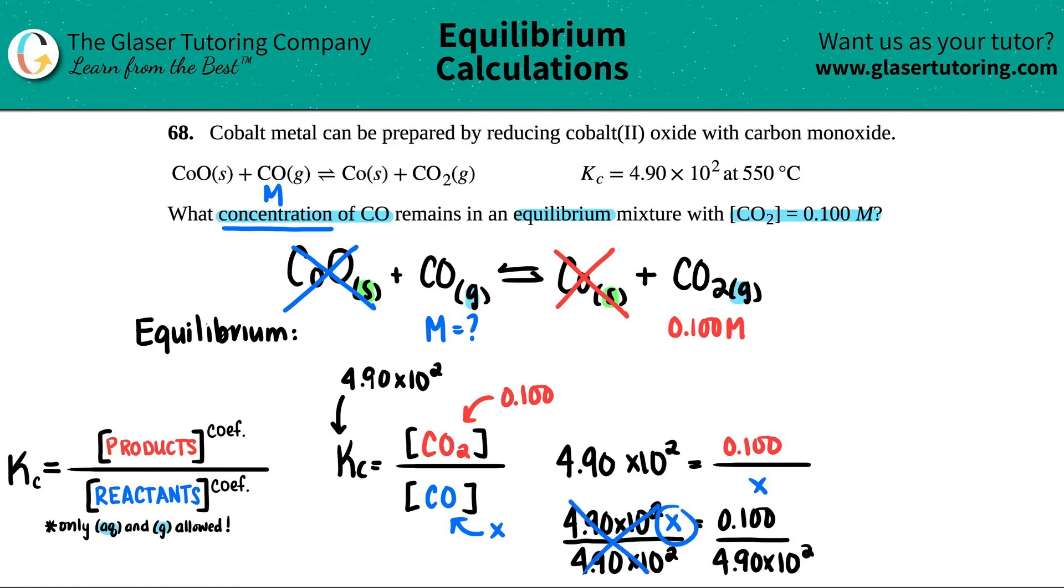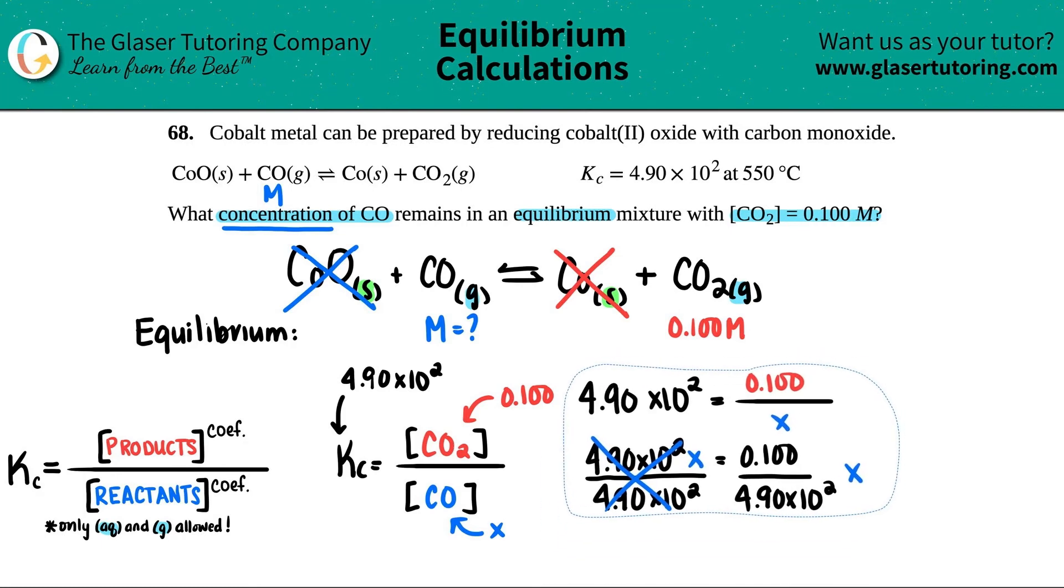All we have to do is just divide by the 4.90 times 10 to the second on both sides, and that will cross this number off so we just are left with x. So now we have x, which was - remember the concentration of CO2 - so concentration of CO. Actually no, sorry, I said CO2. Just the concentration of CO. I'm a little bit under the weather today, so bear with me.